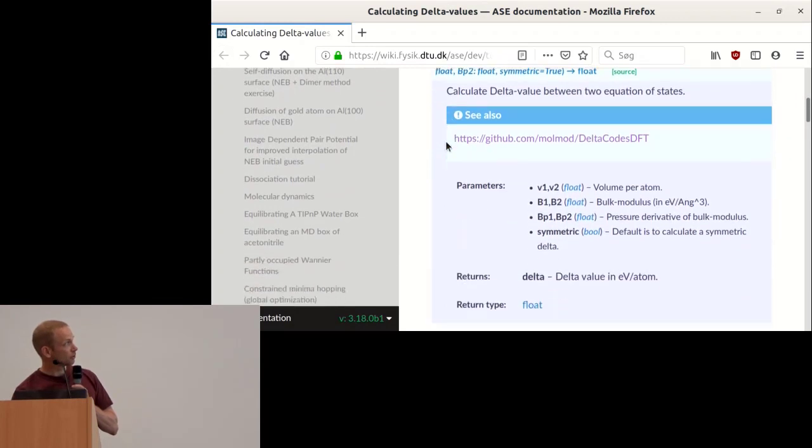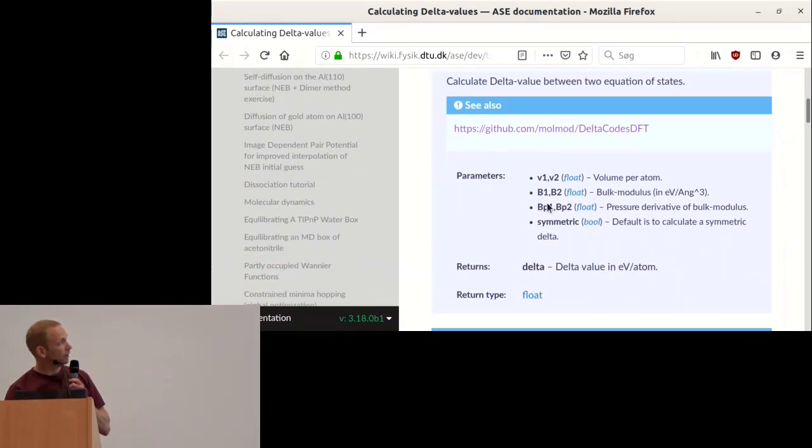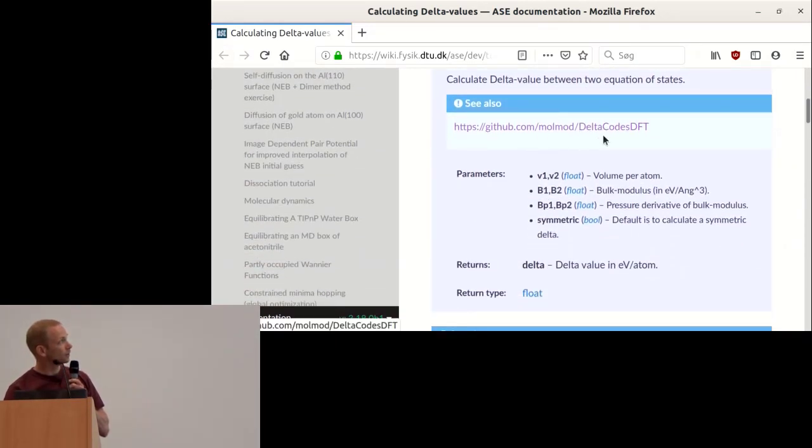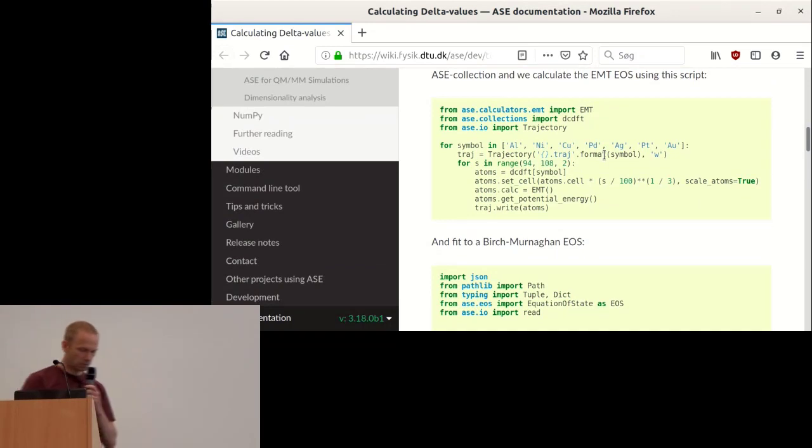This shows this small utility function that you can use. So in ASE, you can import this EMT potential and the collection, and there's this trajectory object that you can use to write trajectory files. Here we loop over the systems we want, make an empty trajectory, loop over the seven volumes, get these crystals, and adjust the size of the cell to the energy and write the trajectory.